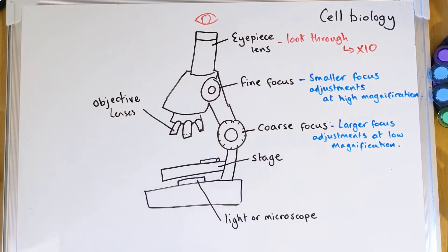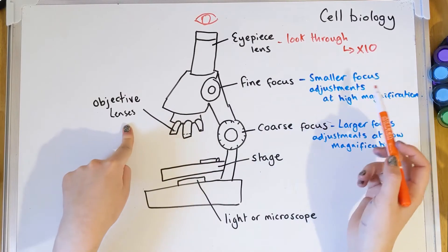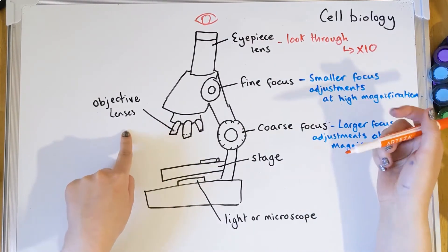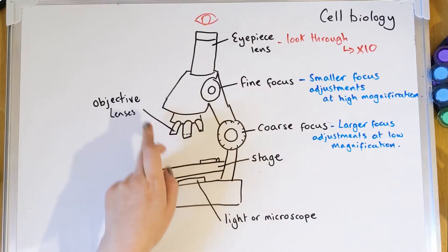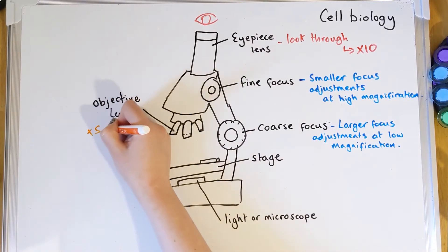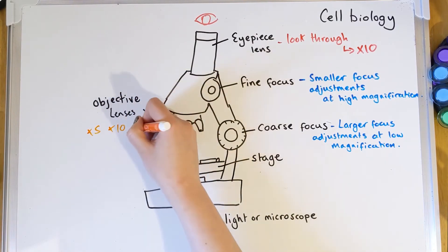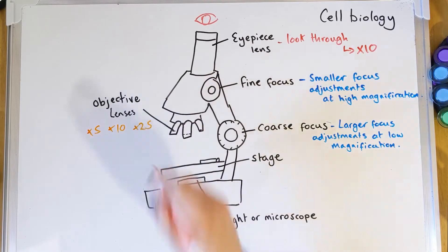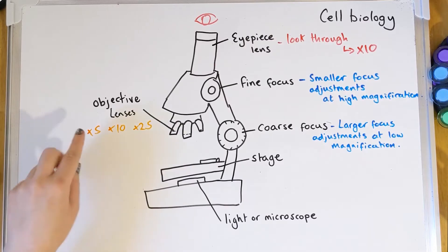Jumping to the other side, we've got the objective lenses. Just like the eyepiece lens, they make images larger — but these are the three you'd turn and click into place to make the image bigger and bigger. They usually come in three strengths: times 5, times 10, and times 25, though a posher microscope might even have a times 40.